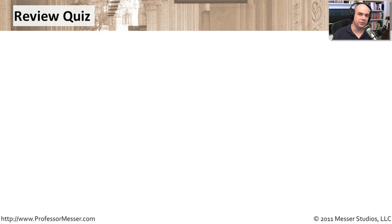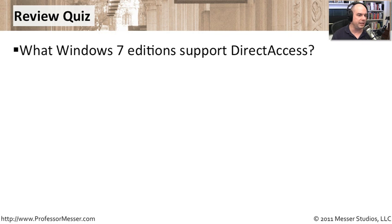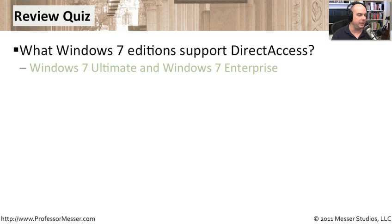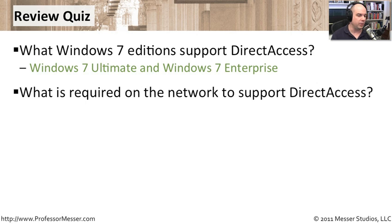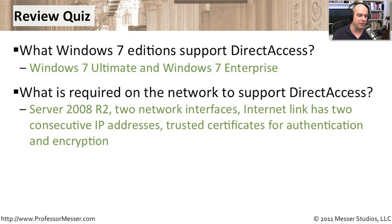Let's review some questions from this module. First: what Windows 7 editions support direct access? Not all editions will work — we need Windows 7 Ultimate and Windows 7 Enterprise. Next: what's required on the network to support direct access? You'll need Server 2008 R2, two network interfaces, the internet link needs two consecutive IP addresses, and you need trusted certificates for authentication and encryption to that server across the internet or WAN link.